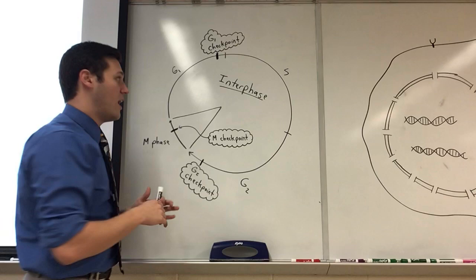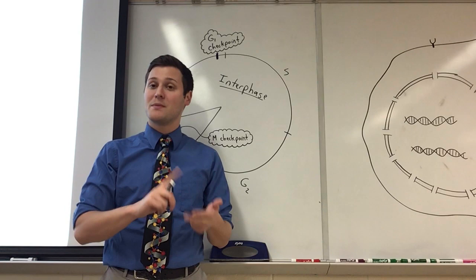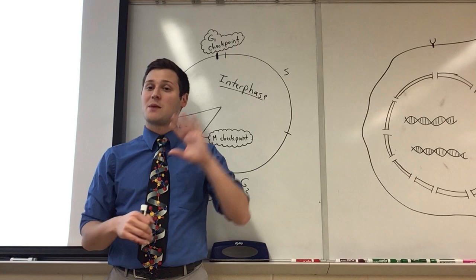So during this process we have three major checkpoints and these checkpoints essentially check to make sure that the cell is ready to progress through the cell cycle. They check for certain things and if the cell meets those checkpoints, meets those requirements, we will allow the cell to continue on in cell division. If not,